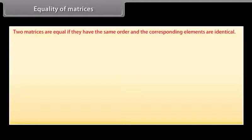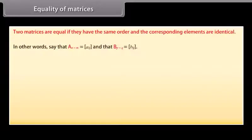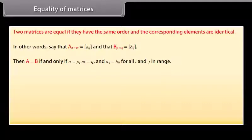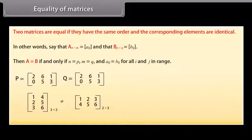Two matrices are equal if they have the same order and the corresponding elements are identical. Matrix A (N by M) equals matrix B (P by Q) if and only if N = P, M = Q, and Aᵢⱼ = Bᵢⱼ for all i and j. Matrices P and Q shown here are equal, while two other matrices are not equal even though they have the same elements.